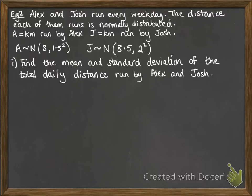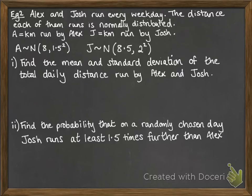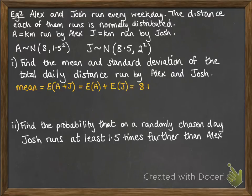First of all, we're going to find the mean and standard deviation of the total daily distance run by Alex and Josh. We're looking for the mean of the total daily distance. We want the expectation of A plus J. That's the same as doing the mean of one plus the mean of the other. So that's 8 plus 8.5 and that's 16.5 kilometers.